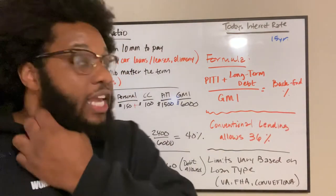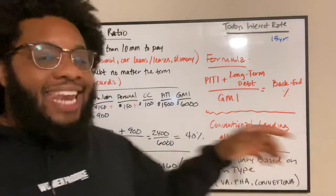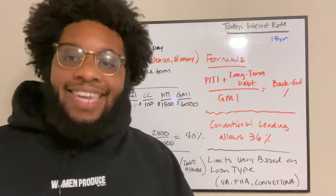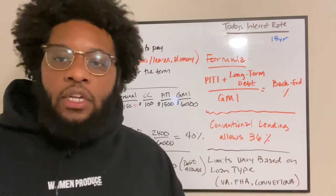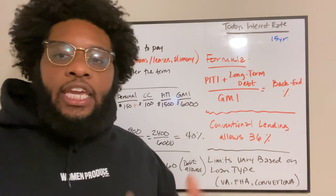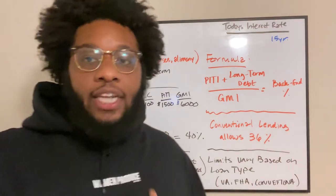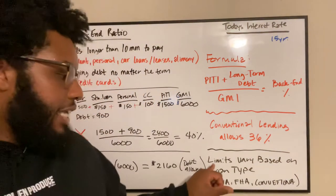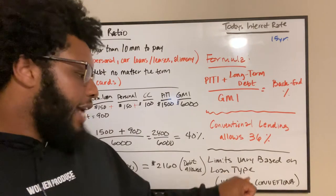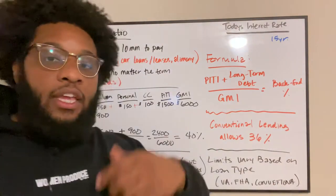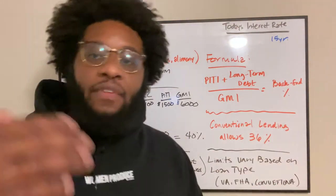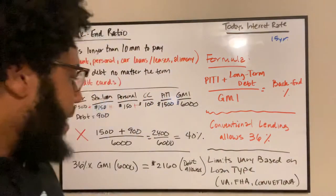Now, we'll use conventional lending. Conventional lending allows a 36% back-end debt ratio. Yesterday we were talking in the 20s — here it is 36 for conventional lending. And as a disclaimer: limits vary based on loan type — VA, FHA, USDA, conventional, and so forth — and every lender has different guidelines, so understand that.